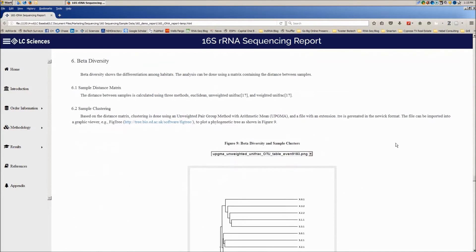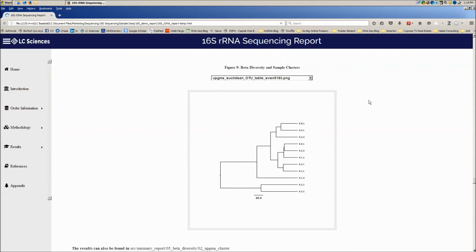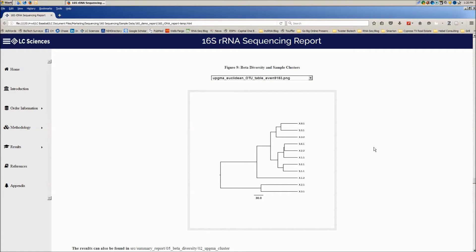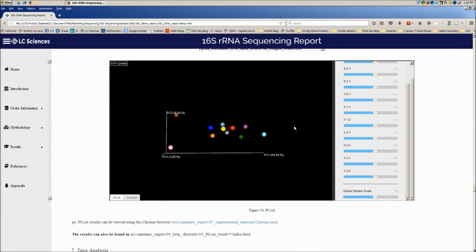Beta diversity represents the explicit comparison of microbial or other communities based on their composition. Beta diversity metrics thus assess the differences between microbial communities. Clustering analysis of beta diversity data is performed to plot a phylogenetic tree and principal coordinates analysis is performed to visualize and explore similarities or dissimilarities of data.